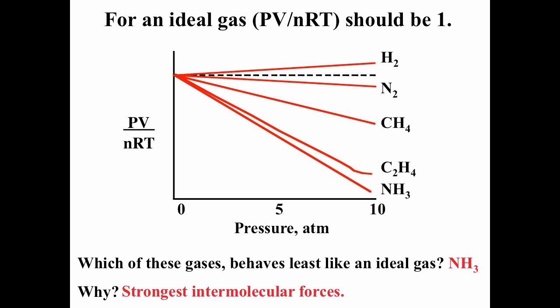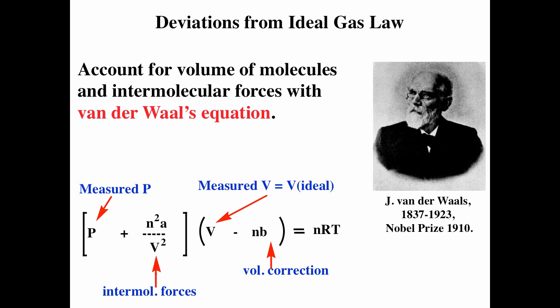We can still calculate parameters for gases under non-ideal conditions, but we have to use something like Van der Waals' equation. There's actually a series of different empirical equations trying to take into consideration non-ideal behavior of gases. Van der Waals' equation is one of the more common ones.